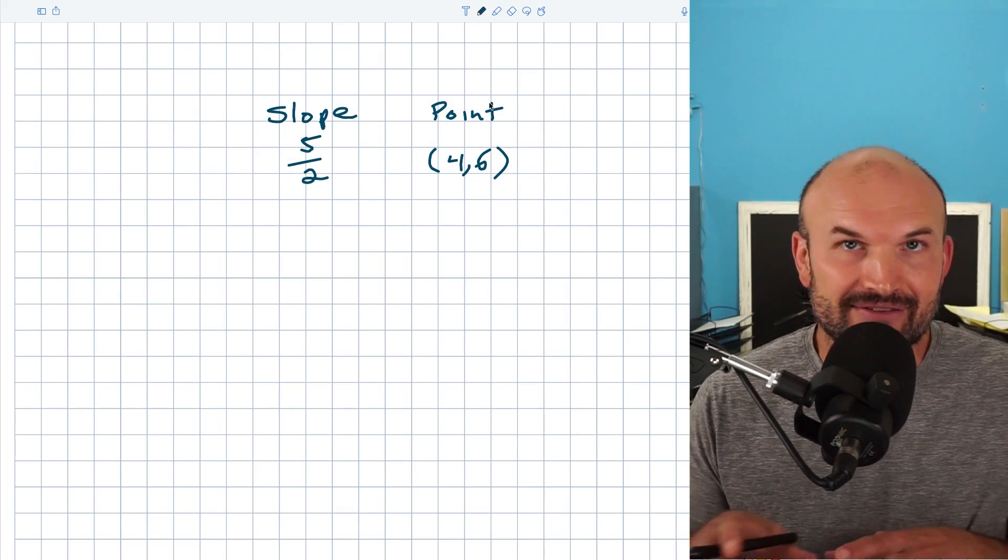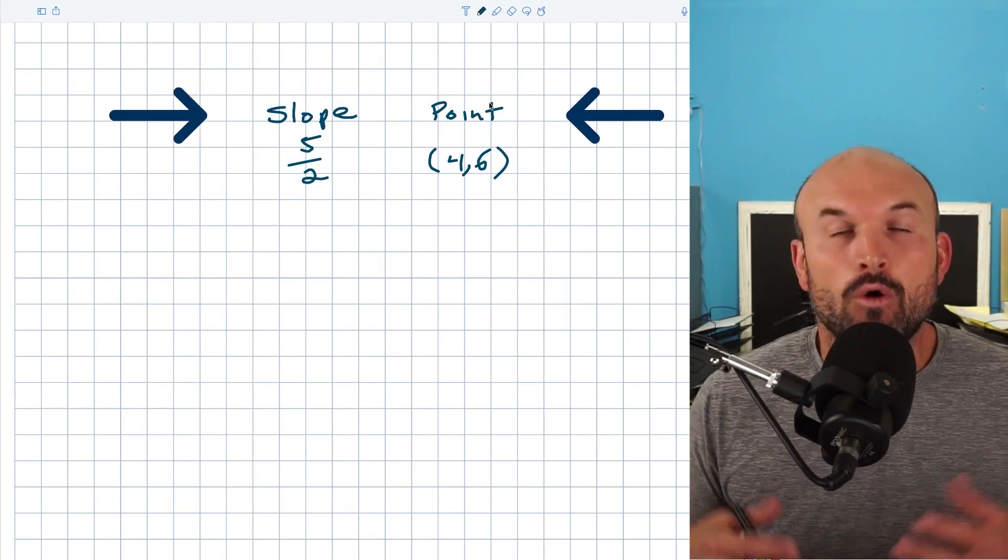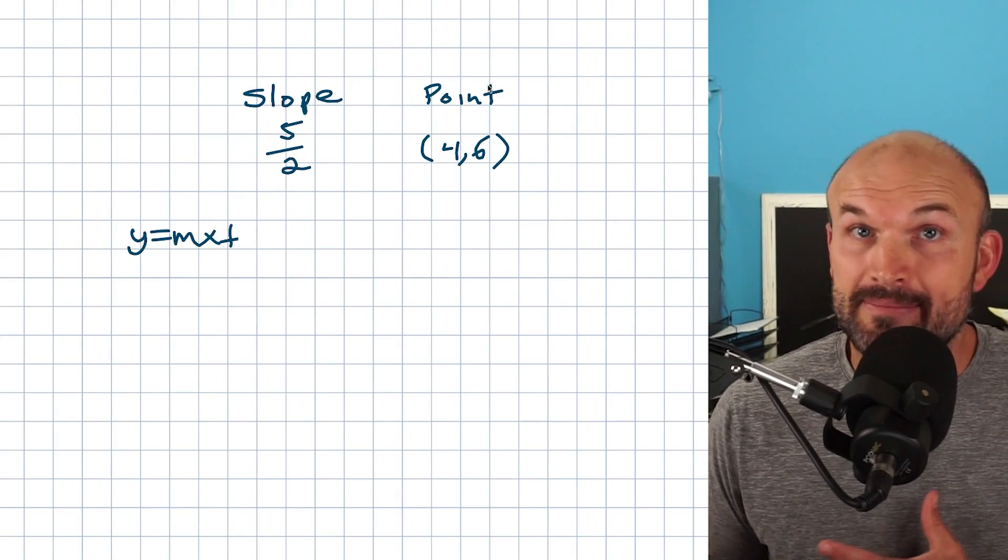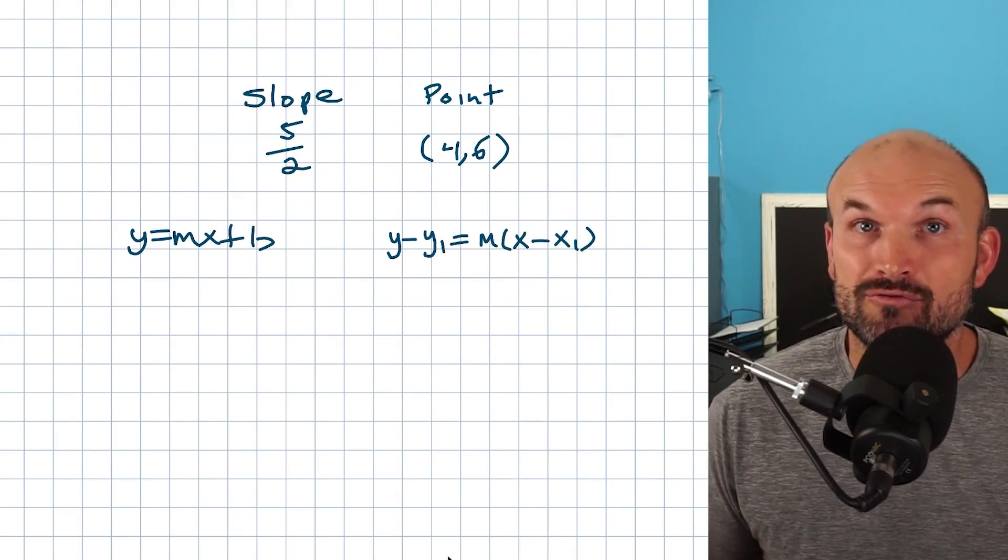So when you need to write the equation of a line and you're given the slope as well as a point, what is the best method to be able to use? Either slope-intercept form, y equals mx plus b, or using point-slope form.